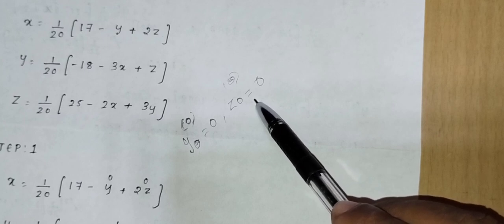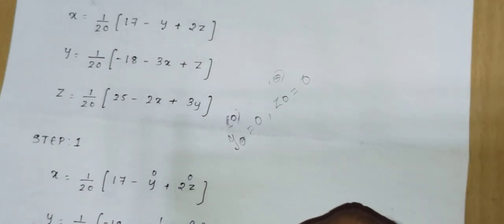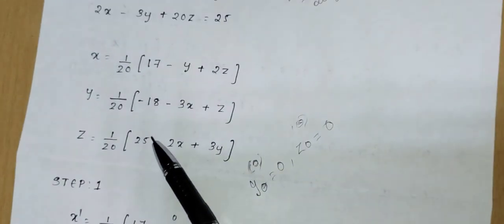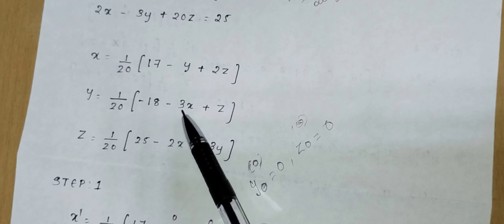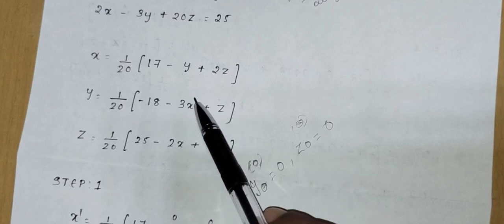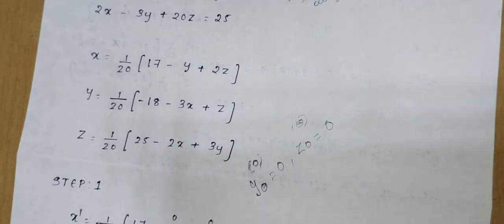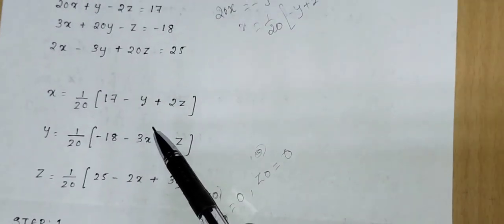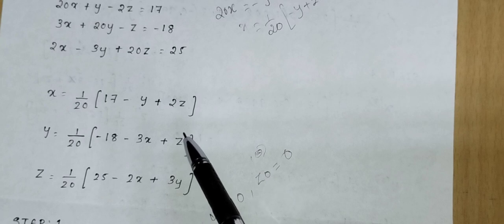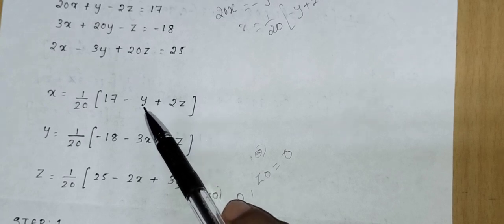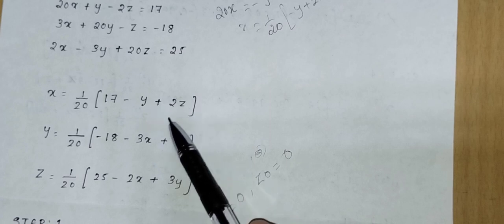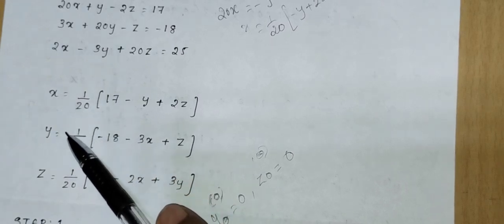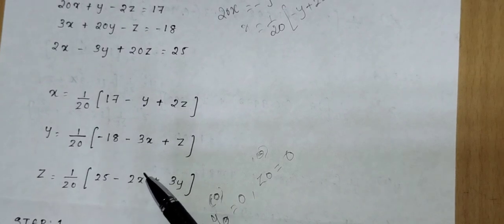Substituting y₀ = 0 and z₀ = 0 into the x formula, we get x₁ = 17/20 = 0.85. For y₁, the formula is y = (1/20)(-18 - 3x + z). Here we use the already-computed x₁ value rather than x₀, because we have it. So we use x₁ but z₀ since we don't yet have z₁.